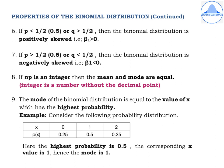To illustrate the mode, consider a probability distribution where x takes values 0, 1, 2 with P(x) = 0.25, 0.5, 0.25. The sum of probabilities equals 1. The highest probability is 0.5, corresponding to x = 1. Therefore, the mode of the distribution is 1.